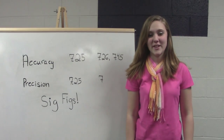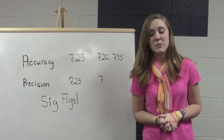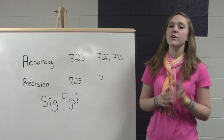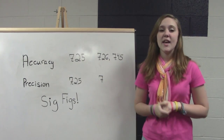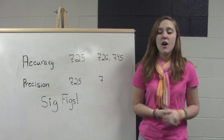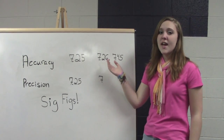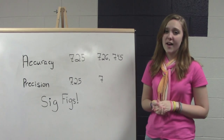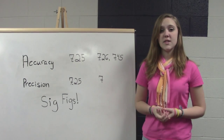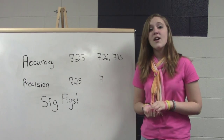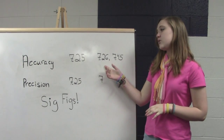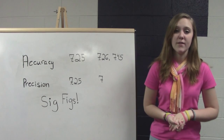Accuracy, precision, and significant figures. There are two things you have to keep in mind when you are reporting numbers for a science experiment or a math problem. Your first one is accuracy. Accuracy is how close to your original number your secondary number is. For example, 7.26 is much closer to 7.25 than 7.45 is, because 7.26 is .01 away from 7.25 and 7.45 is .20 away from 7.25. So 7.26 is much more accurate than 7.45 is.